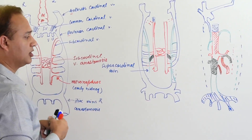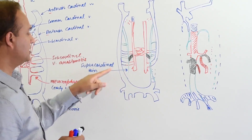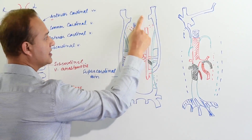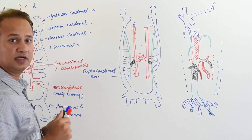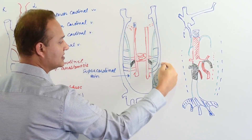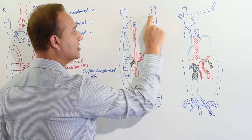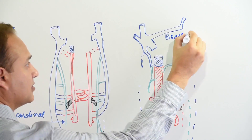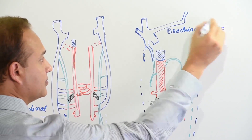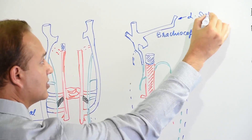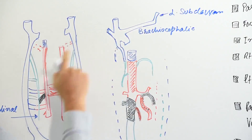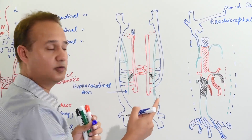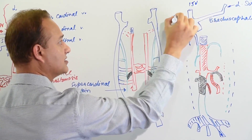In this next diagram, the supracardinal vein has now been added. The sinus venosus shunt is gone. The anterior cardinal and common cardinal will become the brachiocephalic and subclavian veins — the left subclavian — draining into the superior vena cava. This side develops into the superior vena cava. We'll also have jugular veins develop on both sides: internal jugular and external jugular.